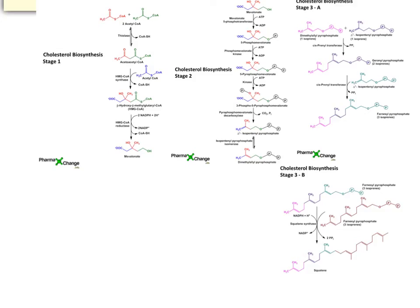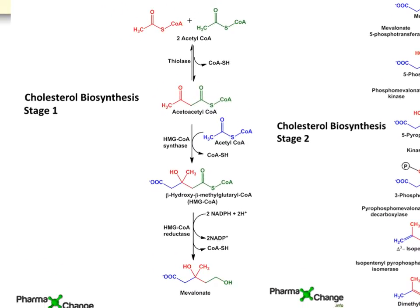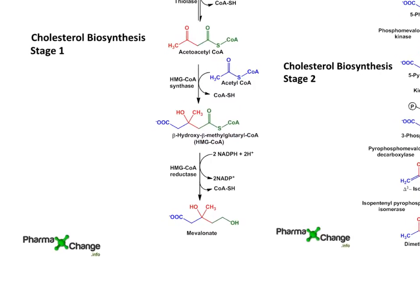Here is each of those steps expanded just a little bit. Two molecules of acetyl-CoA get converted into acetoacetyl-CoA. Then a third molecule of acetyl-CoA gets added to that with HMG-CoA synthase to produce HMG-CoA. And then through the reductase, we get the mevalonate.